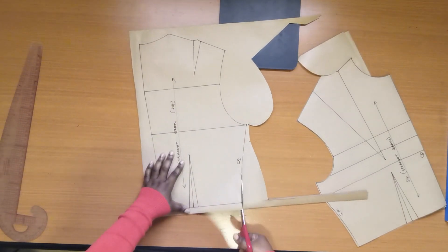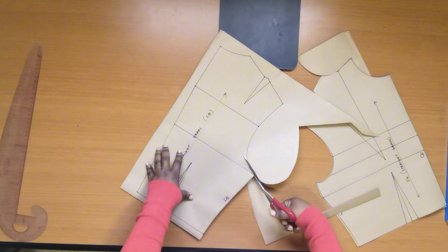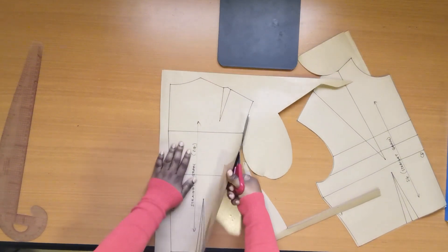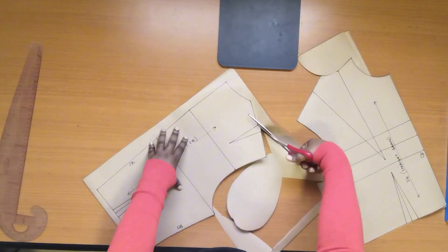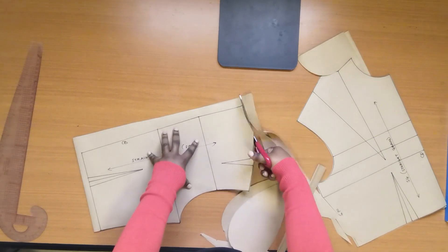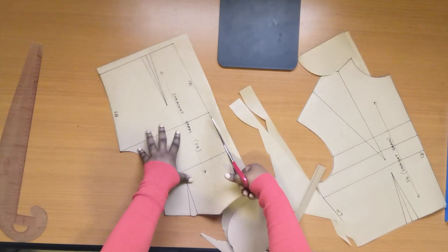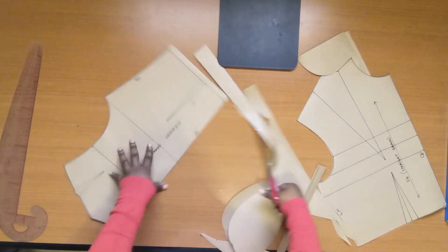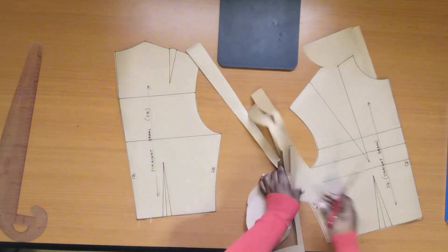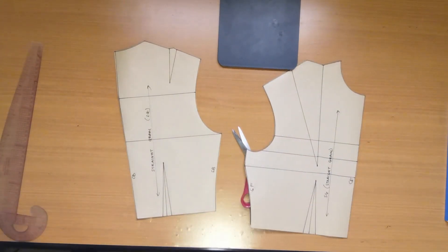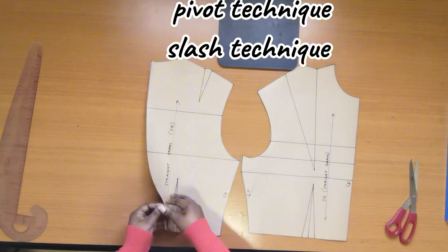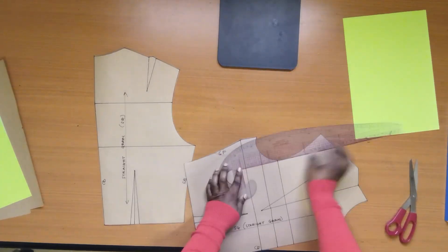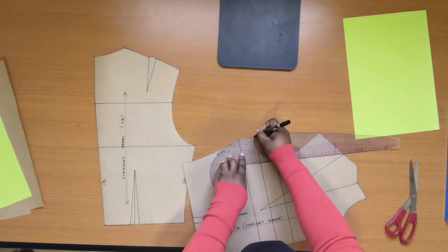It is preferable that the shoulder dart be moved to another position while designing. It makes it easier for you to be able to work with your pattern. There are two techniques involved in dart manipulation: there is the pivot method and the slash method. I'll be demonstrating using the slash method.